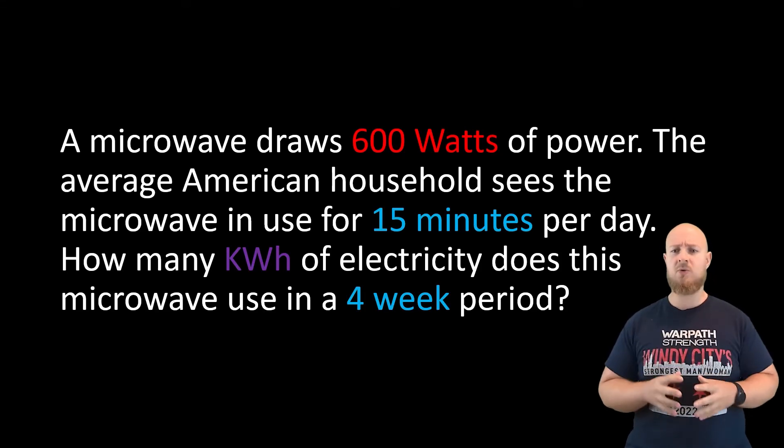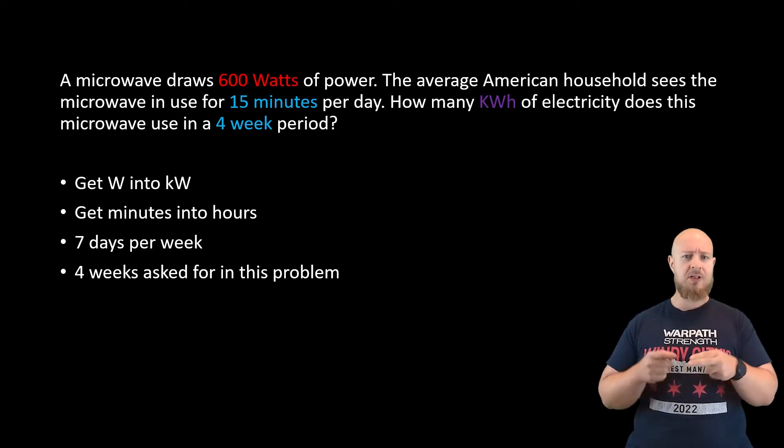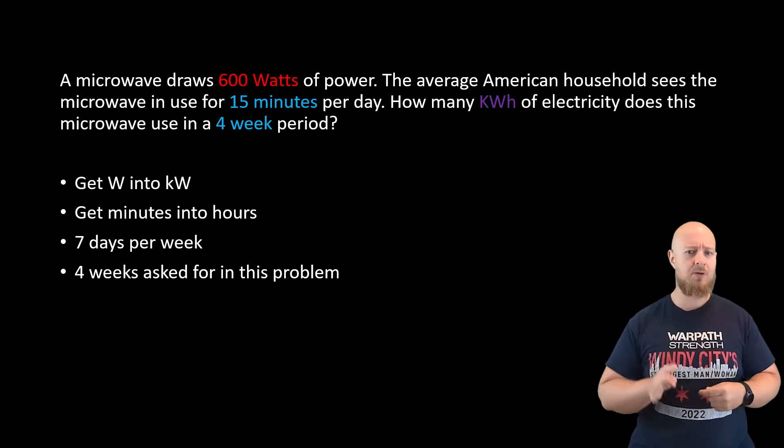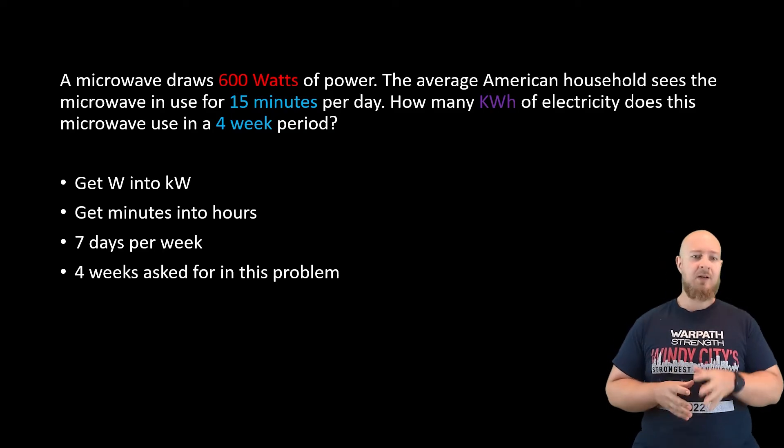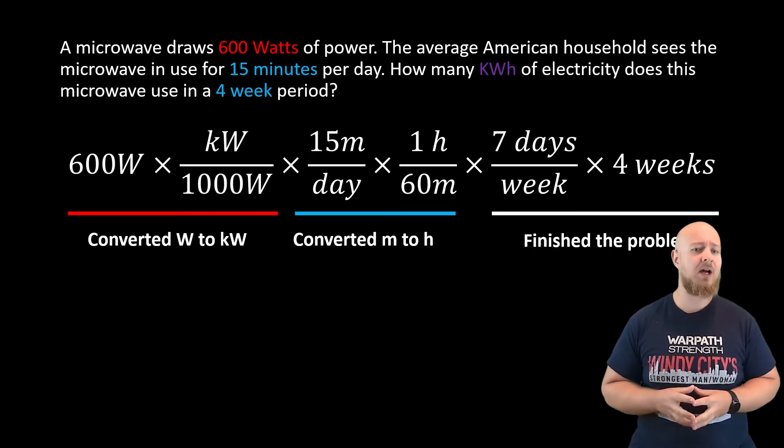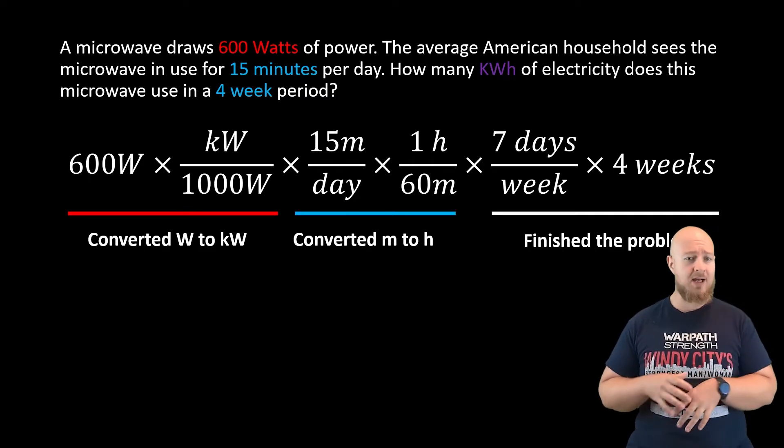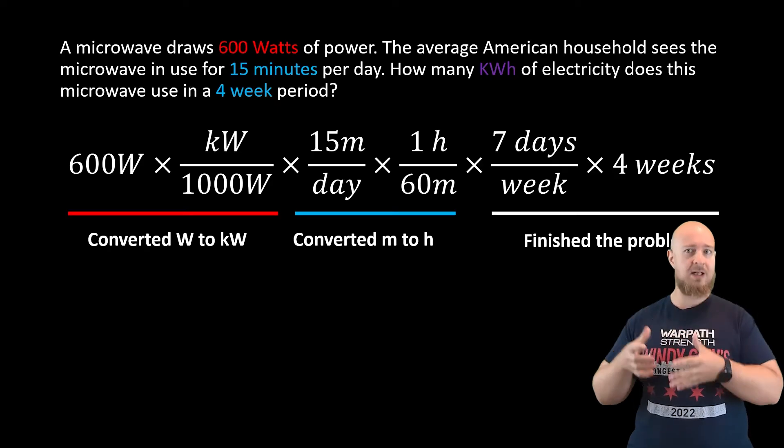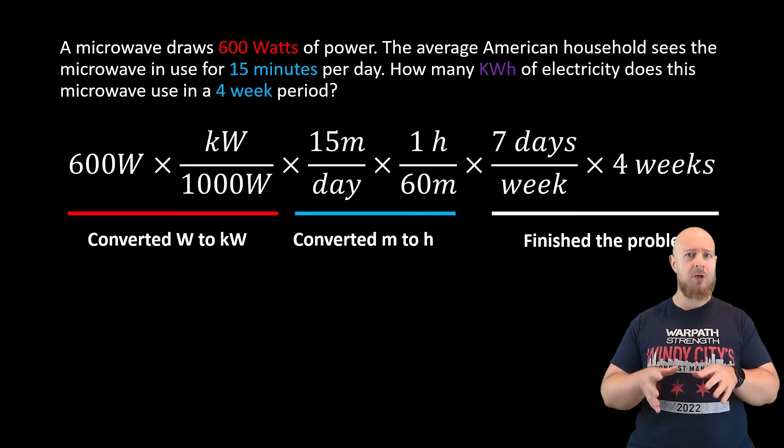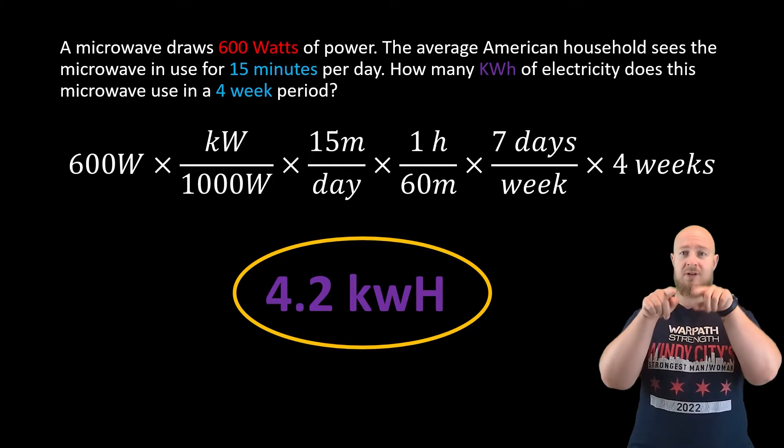To complete this problem we'll need to do a few things. We need to get the watts to kilowatts, we'll need to get the minutes to hours, then we'll need to multiply everything together to get the amount of days in a week and then the four week period we're asked to calculate this problem for. And if you did everything right, your dimensional analysis should look something like this. In this first conversion factor I converted watts to kilowatts, in the second I converted minutes to hours, and then in the third part I just finished the problem - seven days in a week and four weeks in our problem. If you did it all correctly it should have worked out to 4.2 kilowatt hours.